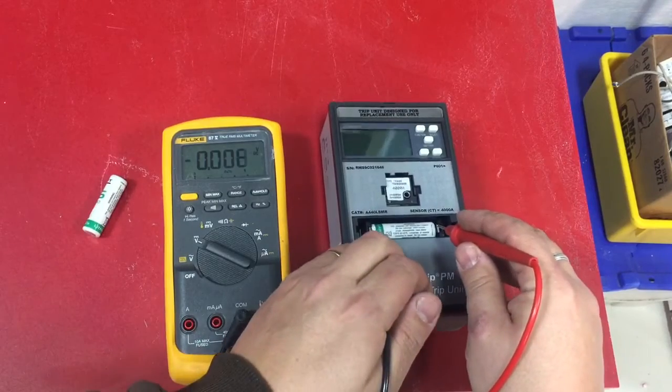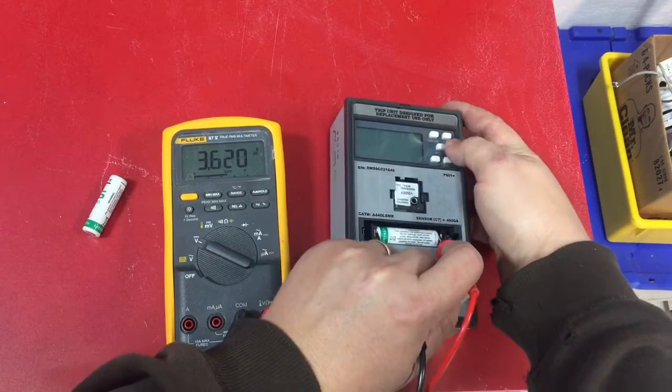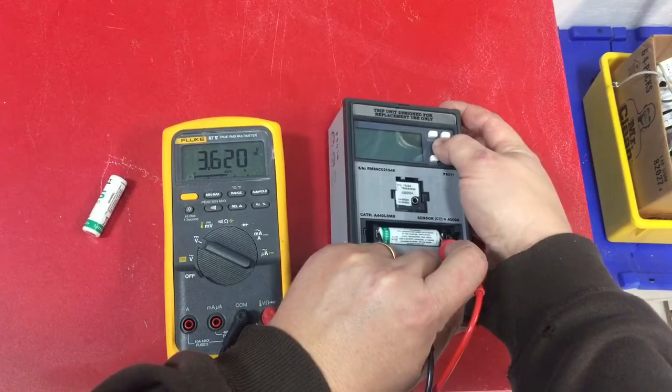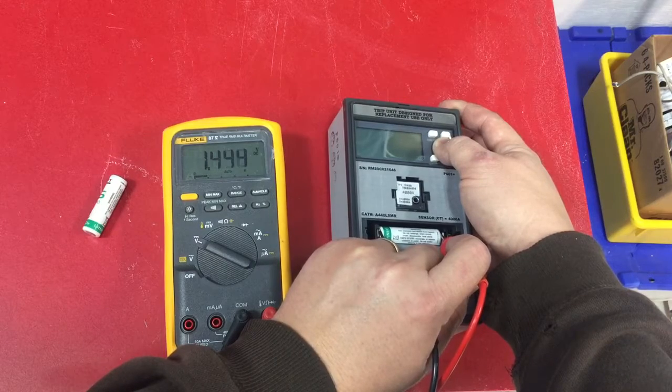Well, the problem with lithium batteries is they're not as simple as just that to test. As soon as you put it under load, put your leads back on there, hit that battery button, watch that voltage drop down to 1.4. It doesn't have enough voltage to be able to power up this trip unit display.